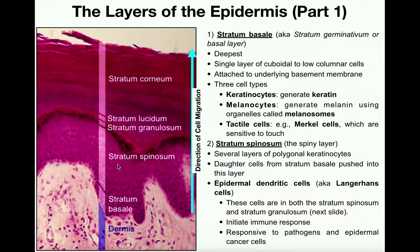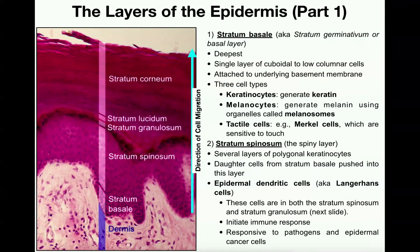A cell that divides in the stratum basale will make its way into the stratum spinosum, then into the stratum granulosum, and eventually all the way up into the stratum corneum, until it gets to the end and falls off. Whenever these stem cells divide in the stratum basale, the resulting daughter cells continually move more superficially — this is the direction of cell migration — until they make their way to the end and eventually fall off. So your epidermis is continually regenerating itself, and the stratum basale is usually considered the most mitotically active layer.